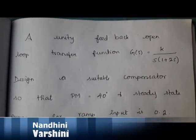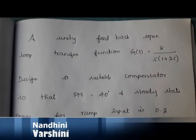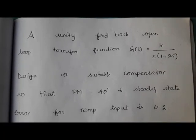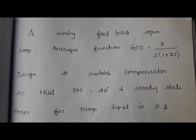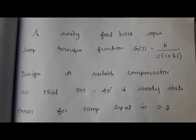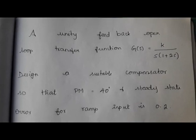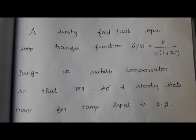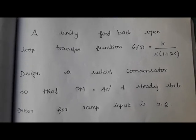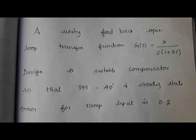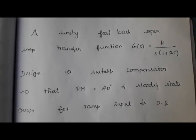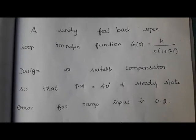My greetings! Here we are going to design a compensator using a Bode plot. The question gives a unity feedback open-loop transfer function G equal to K divided by s into (1 plus 2s). We need to design a suitable compensator such that the phase margin equals 40 degrees and the steady-state error for a ramp input is 0.2.